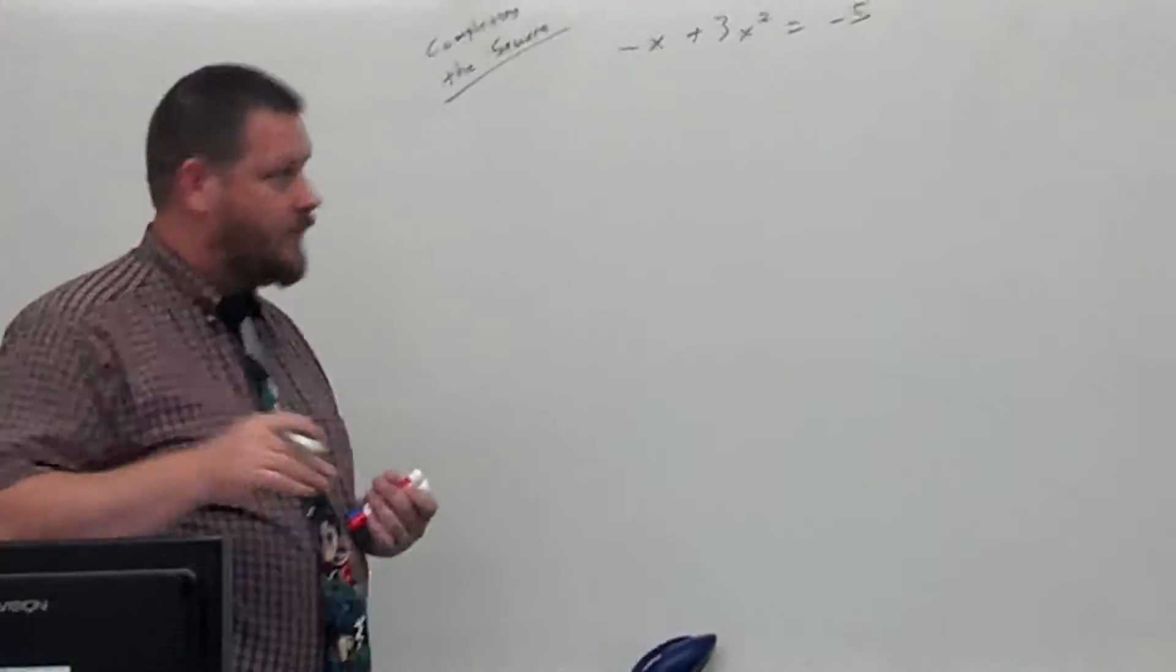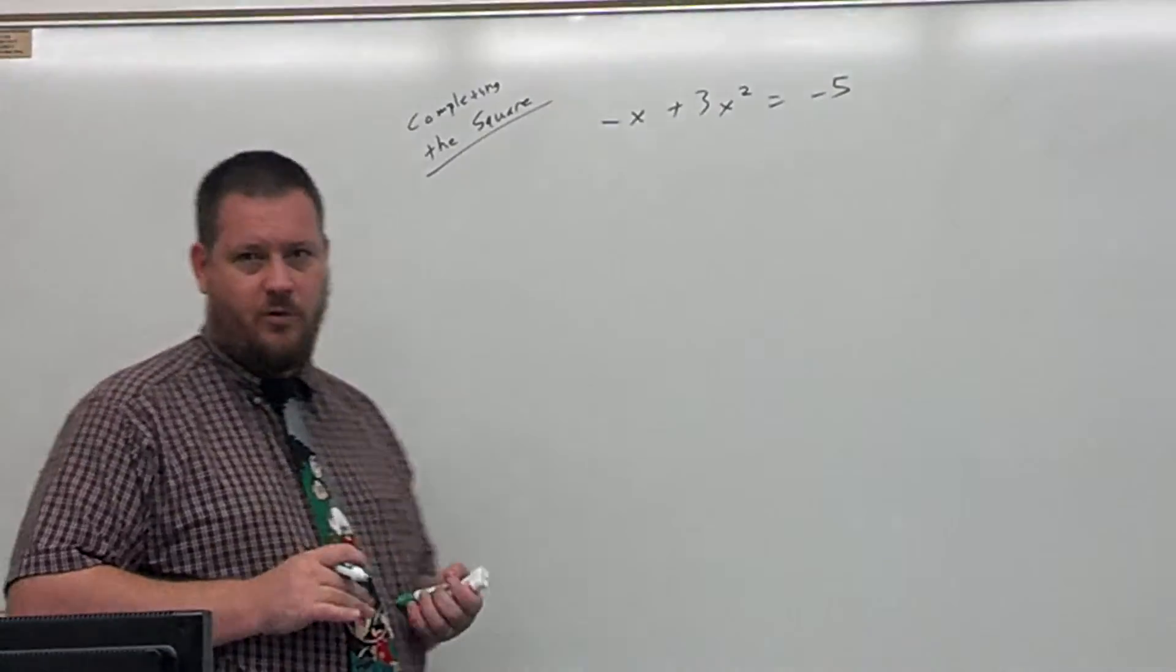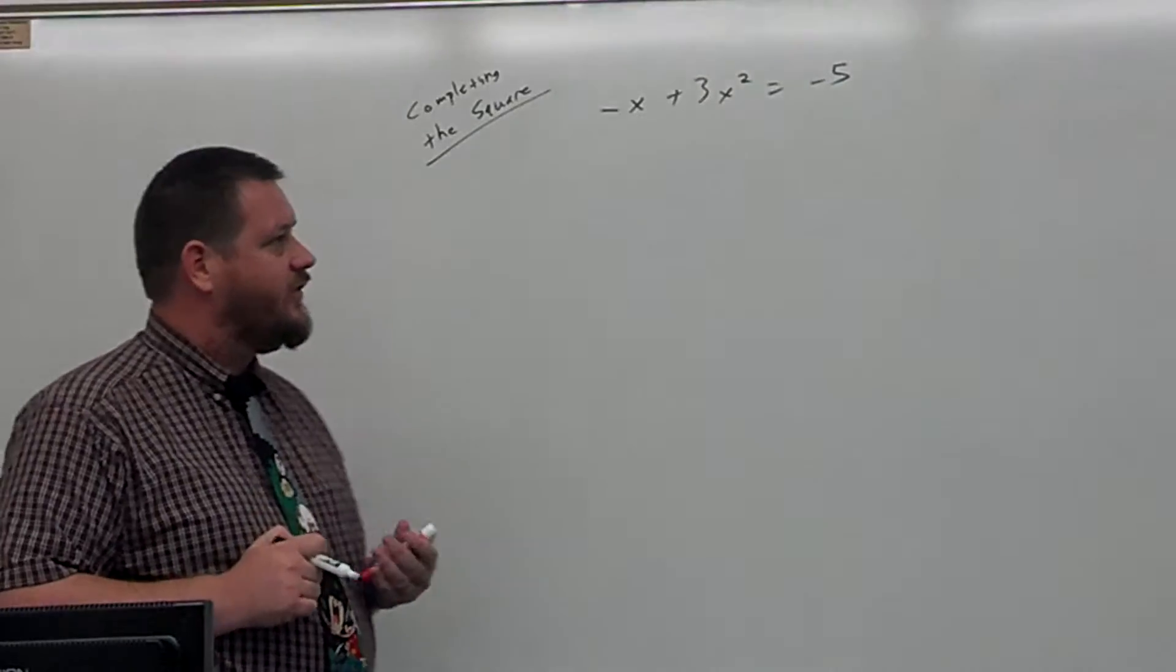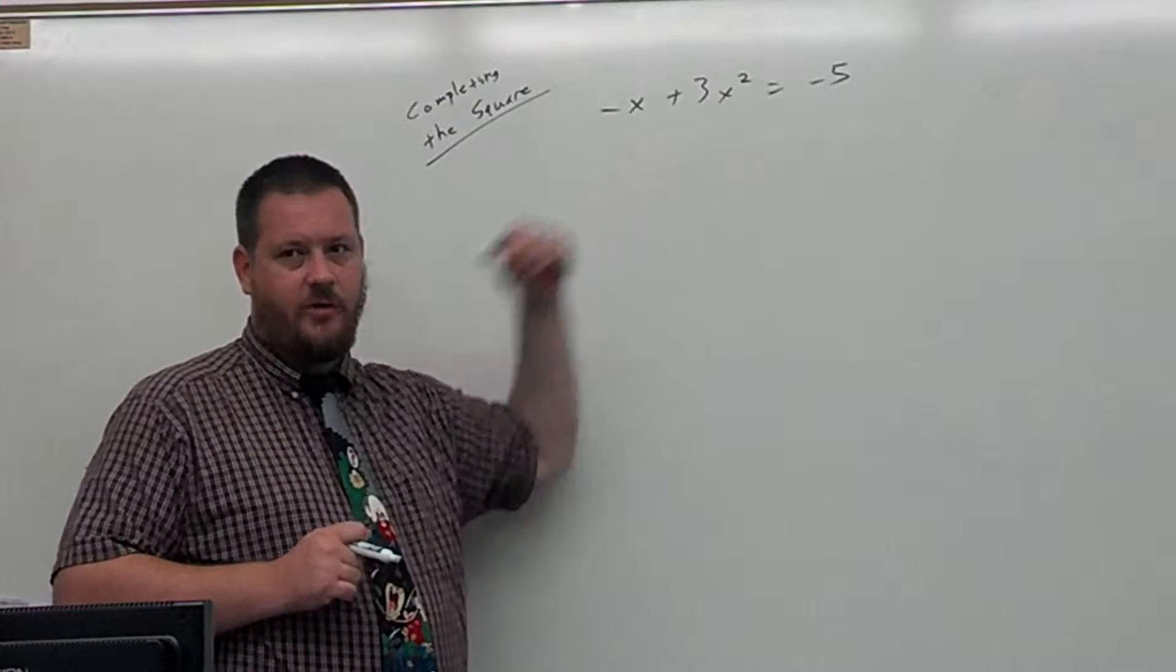Completing the square, since this is review for all of you, I'll give you the quick version. I've got the steps up here. Like I said, there's one missing because we have a coefficient part of the x term.